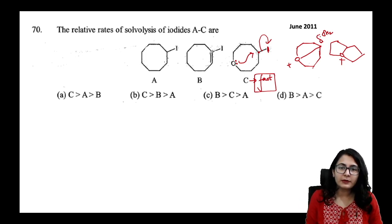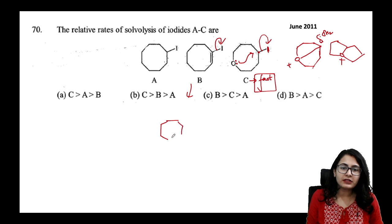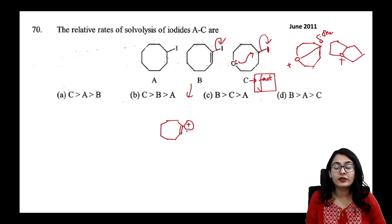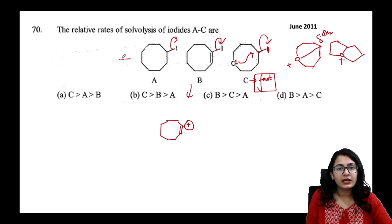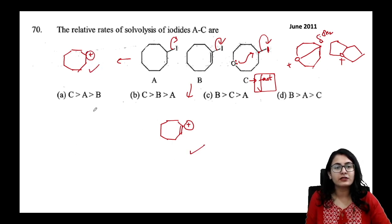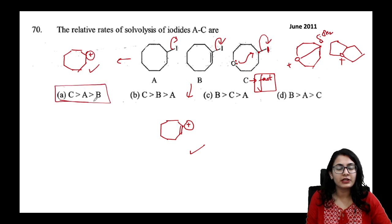For option B, there is no NGP. When the iodine leaves, you get a positive charge on the sp2 carbon — the more electronegative carbon — making it a less stable carbocation. So the answer is option A.